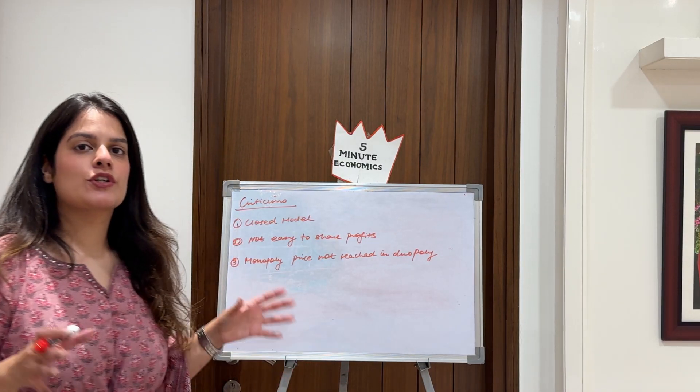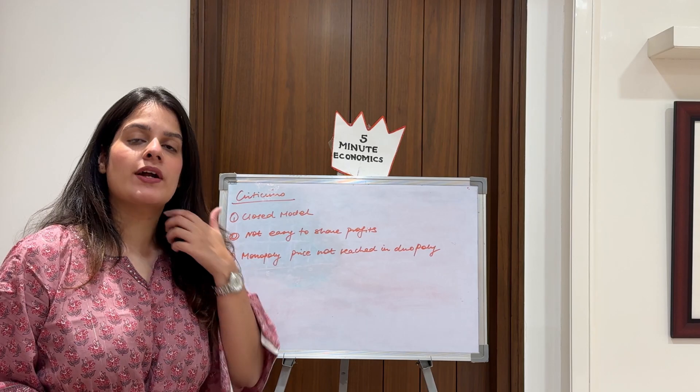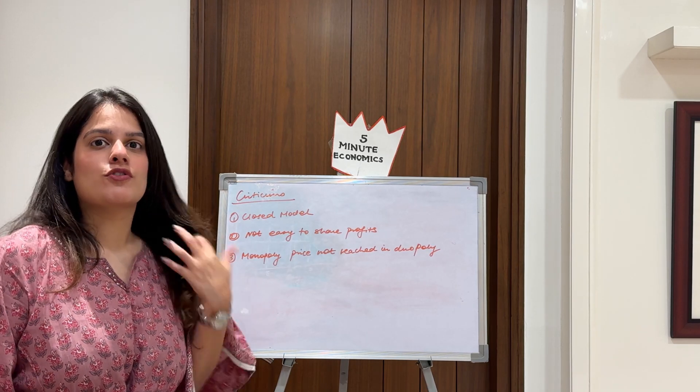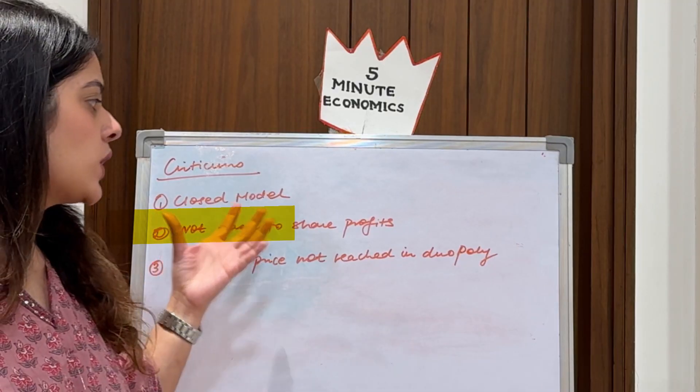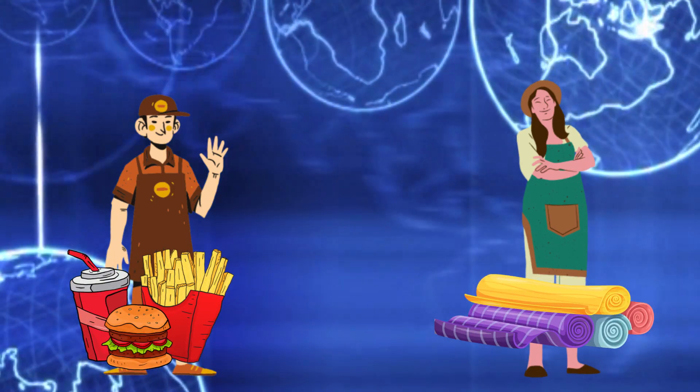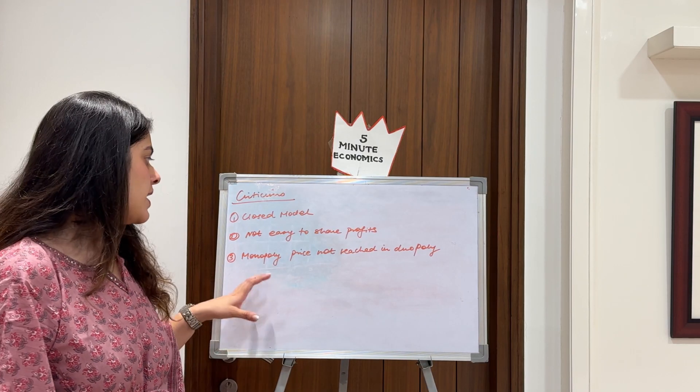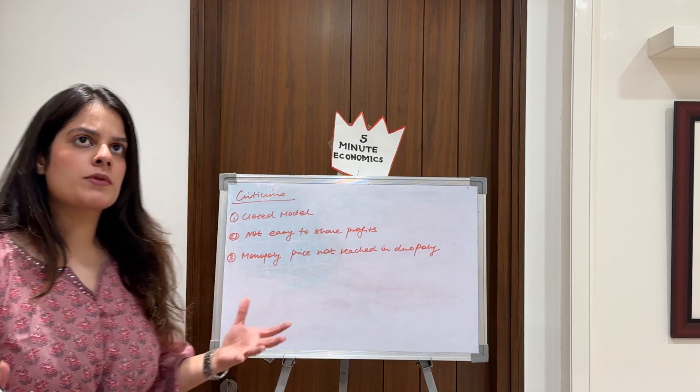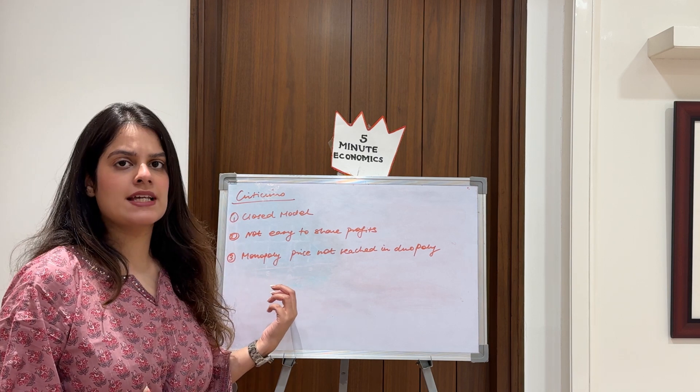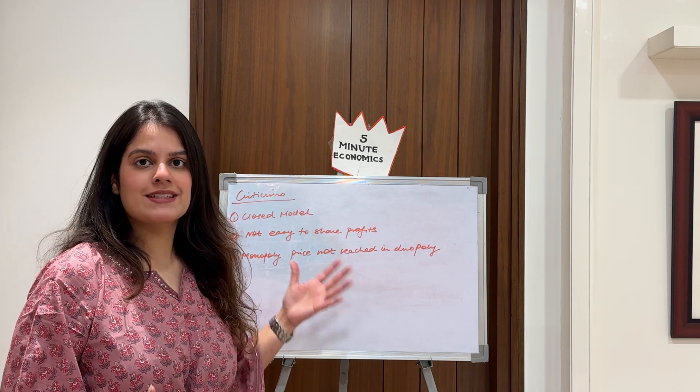Lastly, coming to the criticism of the model. As with Cournot and Bertrand, here also it is a closed model - doesn't allow entry and exit of firms, which is of course not right. And secondly, there is not easy sharing of profits. It's not actually that easy when it comes to the practical world. And lastly, one of the economists known as Fellner also criticized this model, saying that monopoly pricing cannot be reached when you are in a duopoly. These are the few criticisms of this model.